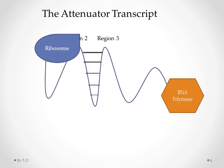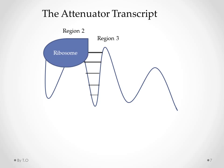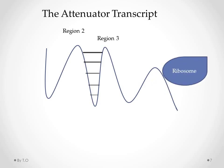If tryptophan levels are low, the ribosome pauses because there are only a few TRIP tRNAs available, so it waits for one to arrive. Meanwhile, RNA polymerase is synthesizing region 4. Due to the fact that region 4 is not completed, region 3 base pairs with region 2. This does not stop transcription and the ribosome eventually continues to translate once TRIP tRNAs become available.